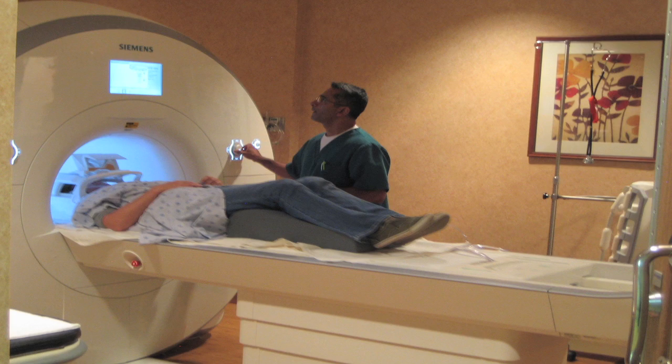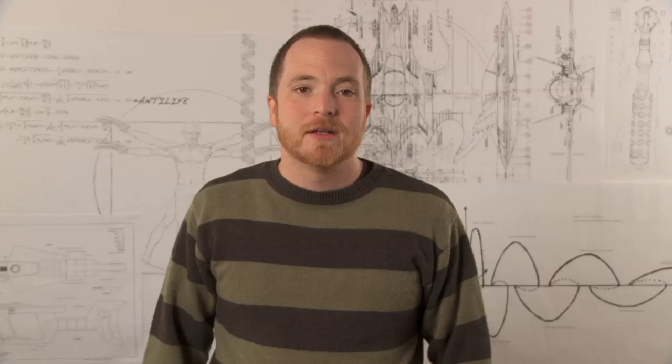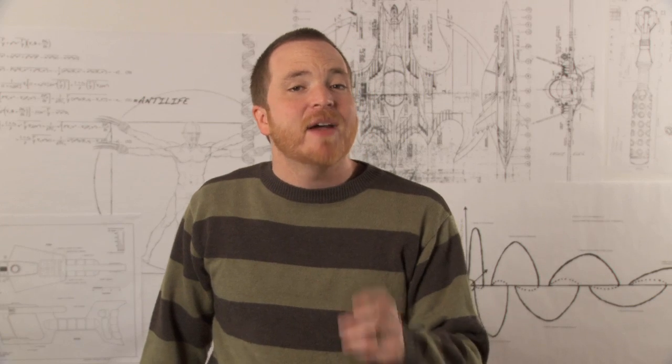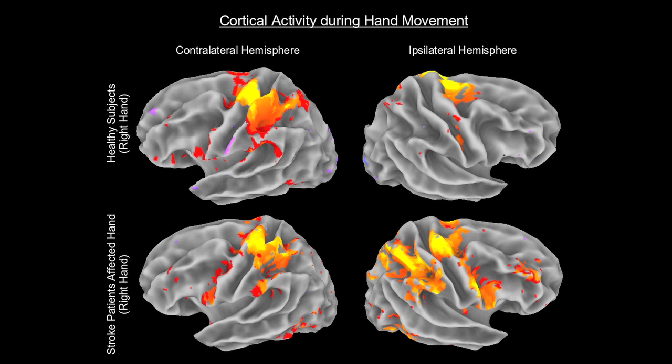EEG isn't the only way we're able to read minds. Functional magnetic resonance imaging identifies thoughts with even greater detail. Instead of electrical signals, fMRI machines measure blood flow to different regions in the brain.